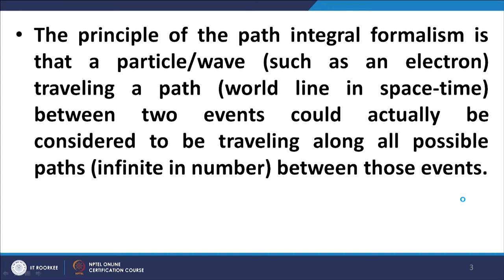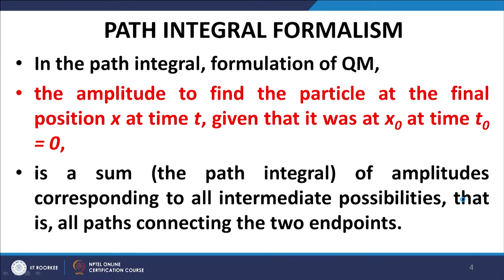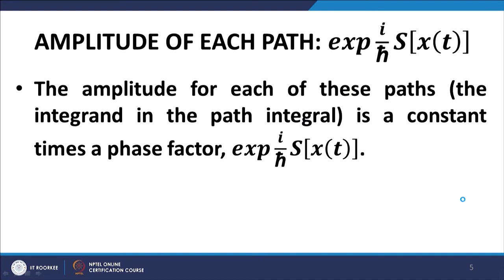The principle as propounded by Feynman, on the basis of earlier work by Dirac and his own ingenuity, is that given a particle or equivalently a wave that travels a path which is a world line in space-time between two events, we could view the transition as comprising all infinite paths moving from the initial point to the destination point. Each of those paths is weighted by a factor related to the classical action, given by exp(iS[x(t)]/ℏ). This is the weighting factor with which each path is weighted, and then we arrive at the expression for the transition amplitude.